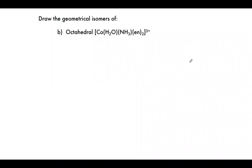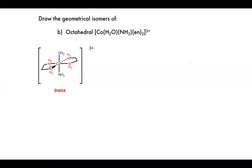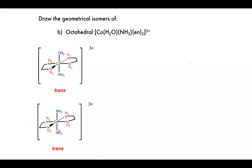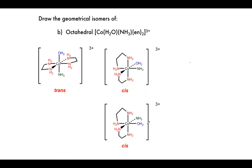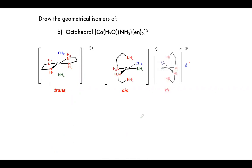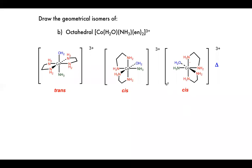Drawing the geometrical isomers of the octahedral complex aminoaquabis(ethylenediamine)cobalt(III). For the trans isomer, the monodentate ligands are opposite each other. You could draw water at the bottom or top, but these are actually identical — you can just flip one over. For the cis isomers, the two monodentate ligands are beside each other. Within the cis isomers, we can have lambda and delta optical isomers — the delta isomer is where we have clockwise rotation.